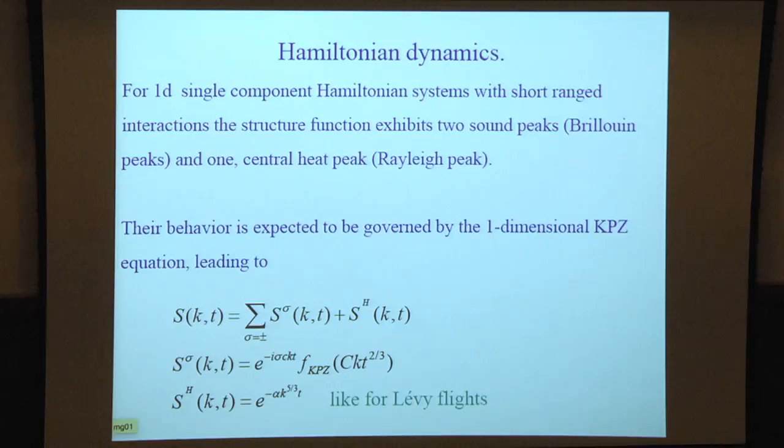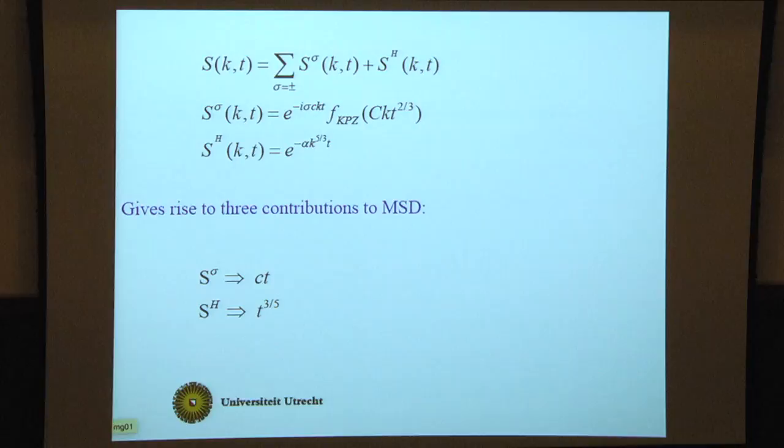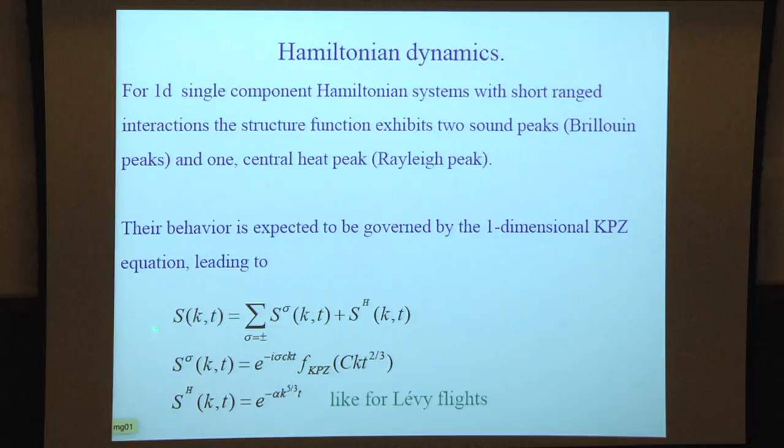For one-dimensional single component Hamiltonian systems with short range interactions, Herbert Spohn discussed that at length. The structure function exhibits two sound peaks called Brillouin peaks and one central peak called the Rayleigh peak.